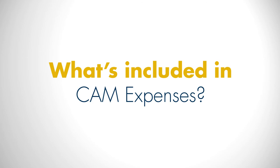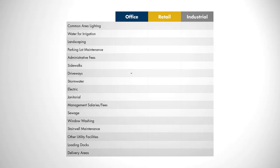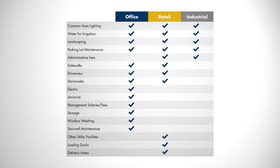You have different common areas depending on the property type — office, retail, and industrial. Retail and industrial are going to be very similar. Office is going to include more janitorial, utilities such as electrical and water, and more robust services such as HVAC maintenance and elevator maintenance.